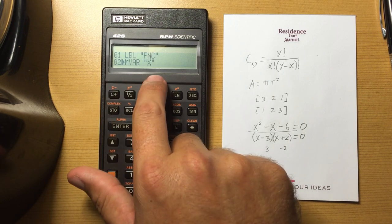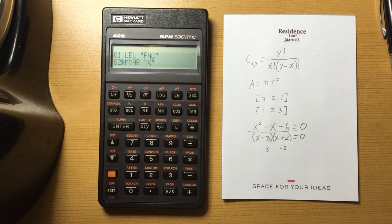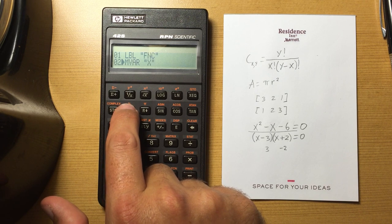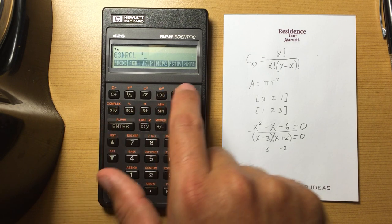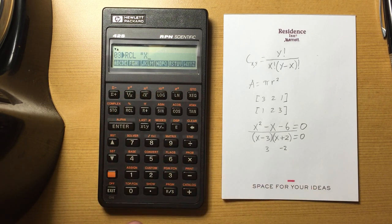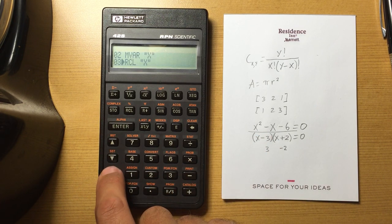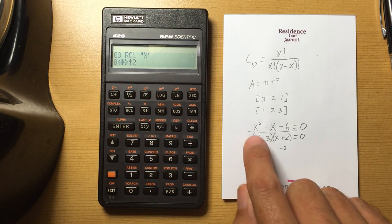So we're going to do a menu variable x. We're going to enter an x and then we're going to recall x. We're going to square it. That'll be this part.